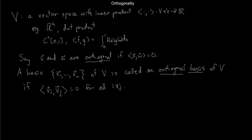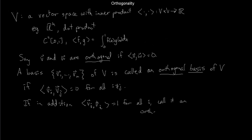Mutually orthogonal means that if I take vi dot vj, I get 0 as long as i is different from j. If I also have the condition that vi dot vi equals 1 — meaning vi is a unit vector for each i — then I call this basis not just orthogonal but orthonormal. Normal sometimes means unit length in math, so an orthonormal basis has all vectors mutually orthogonal and each one has length 1.